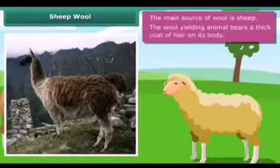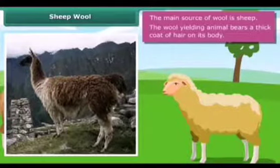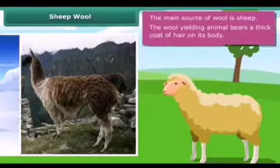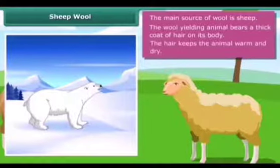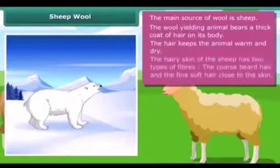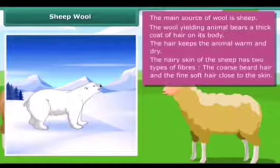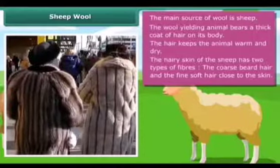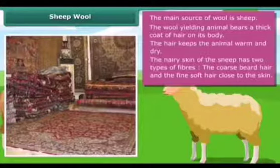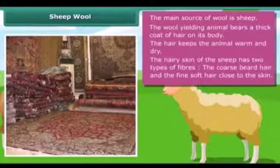The main source of wool is sheep. The wool-yielding animal bears a thick coat of hair on its body. The hair traps air — since air is a poor conductor of heat, the hair keeps the animal warm and dry. The hairy skin of the sheep has two types of fiber: the coarse beard hair and the fine soft hair close to the skin. The fine hair is used for making woolen clothes, and the coarse hair is used for making carpets, as you can see in the picture.